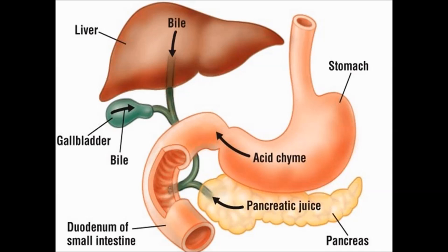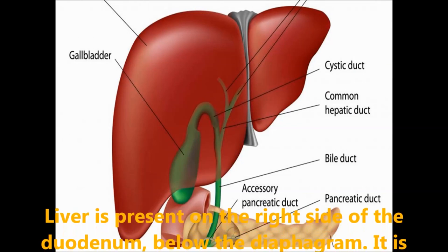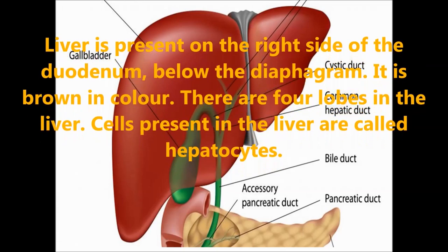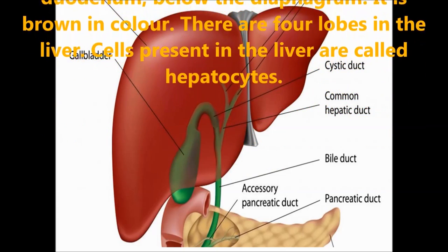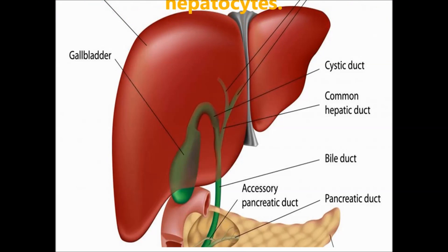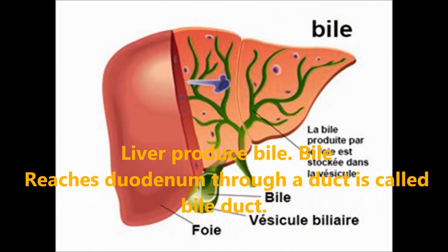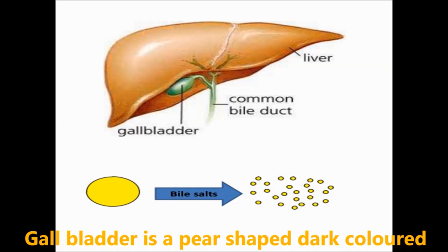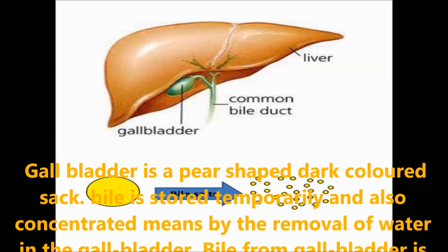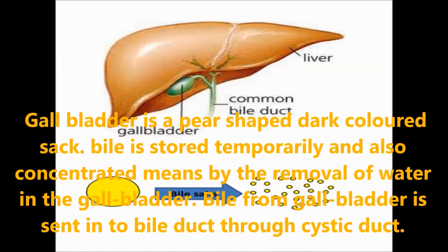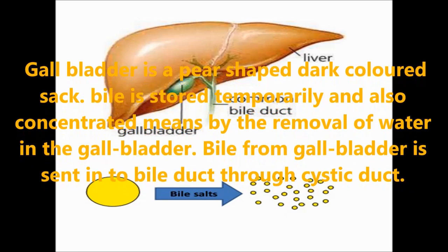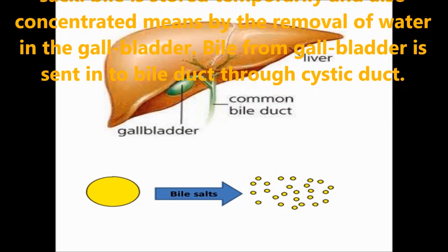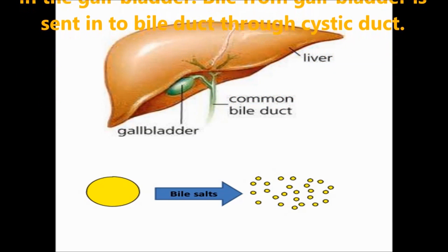The liver is present on the right side of the duodenum below the diaphragm. It is brown in color and has four lobes. The cells present in the liver are called hepatocytes. The liver produces bile, which reaches the duodenum through a duct called the bile duct. The gallbladder is a pear-shaped, dark-colored sac where bile is temporarily stored and concentrated by removal of water. Bile from the gallbladder is sent into the bile duct through the cystic duct.